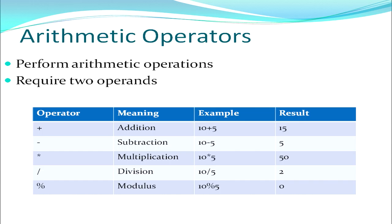Arithmetic operators perform various arithmetic operations and are binary operators requiring two operands. The table shows the five arithmetic operators supported by C++: plus for addition, minus for subtraction, star for multiplication, slash for division, and the percent symbol for modulus. The percent sign gives you the remainder of a division. For example, 10 divided by 5 gives quotient 2, but 10 modulo 5 gives 0 because the remainder is 0.